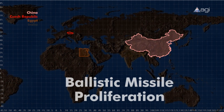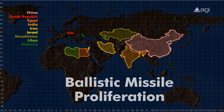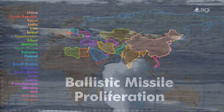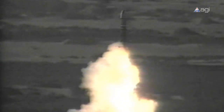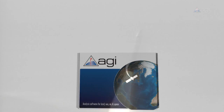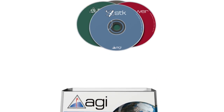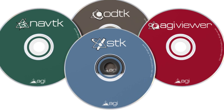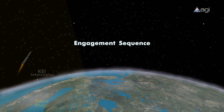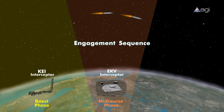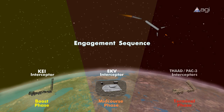The increasing proliferation of missile technology around the world has significantly escalated the need for missile defense capabilities to protect the United States and its allies. In response to this threat, Analytical Graphics, or AGI, has developed a COTS software suite to provide essential design, analysis, and evaluation capabilities towards a layered missile defense solution.